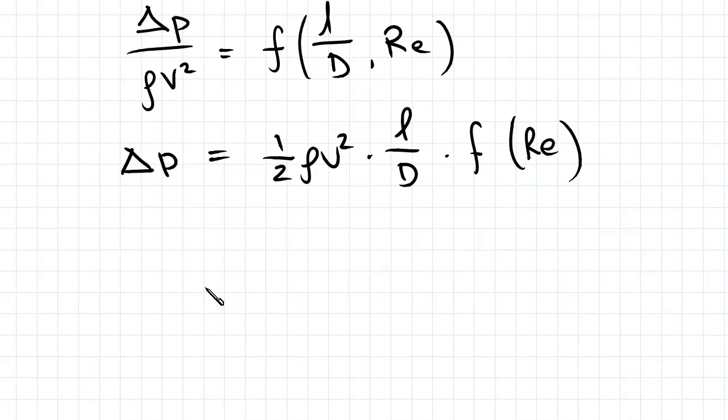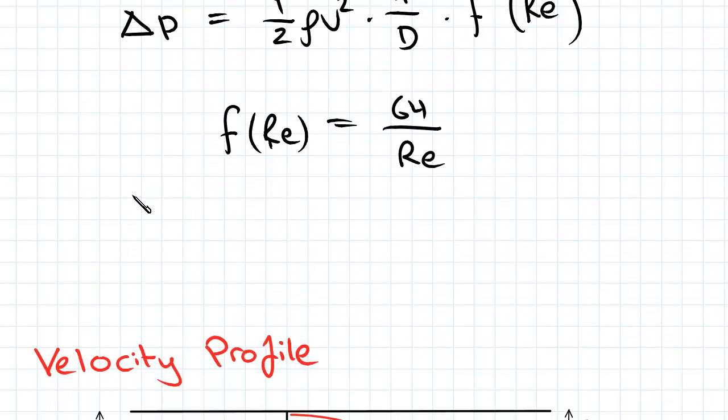For laminar flows, the function here which is called the Darcy friction factor is taken as 64 over Re, and so this whole equation reduces to delta P equals half rho V squared times L over D times 64 over Re.